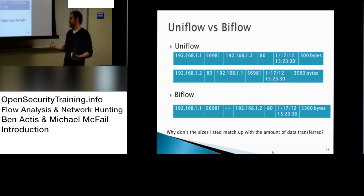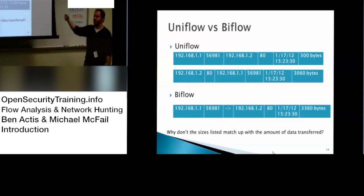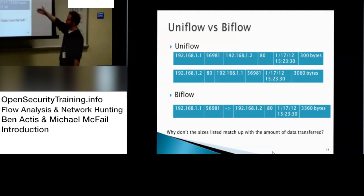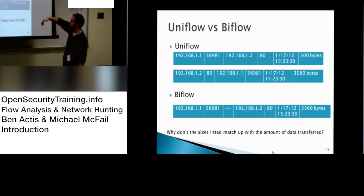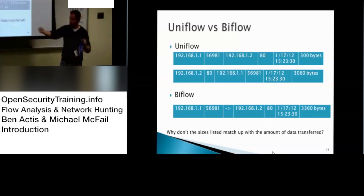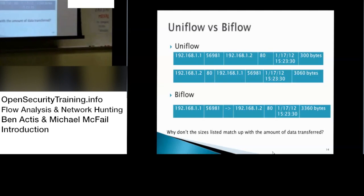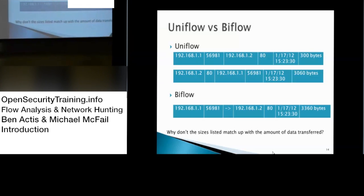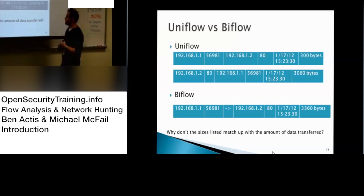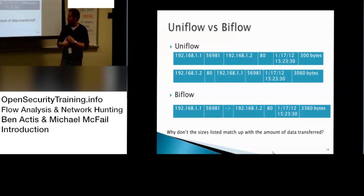There are two flavors of NetFlow: Uniflow and BiFlow. Uniflow gives you the NetFlow perspective on a per-device basis — each machine has its own flow perspective, showing source address, start time, destination, timestamp, and bytes sent. BiFlow expresses the communication between two machines as a single flow. You'll see an arrow indicator in certain applications showing the direction of the flow, with all total byte information combined.